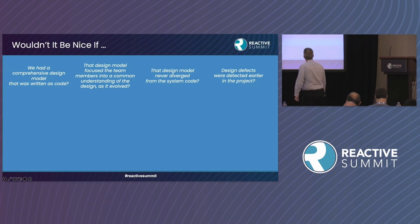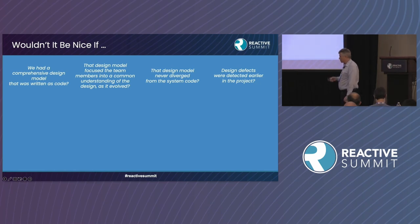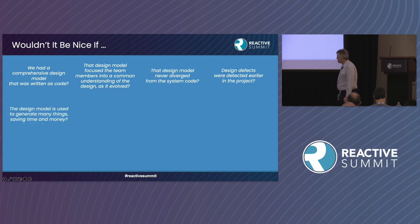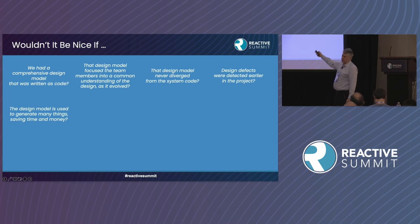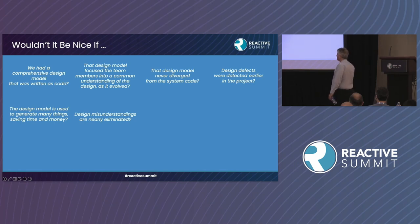Design defects are detected earlier in the project — going back to Kent Beck's argument that the sooner we discover defects in design or code, the less expensive the project is. The design model is used to generate many things, saving time and money. My goal is not to generate all the code, but to generate all the boring infrastructural stuff that should just be generated. Design misunderstandings are nearly eliminated as a consequence of keeping everybody on the same page.